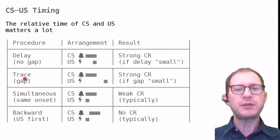On the next row of the table, we have trace conditioning. This means that there is a gap between the CS and the US. The gap is called the trace interval. This procedure is effective if the gap is small, again in quotes, to indicate that things can be different for different CRs.